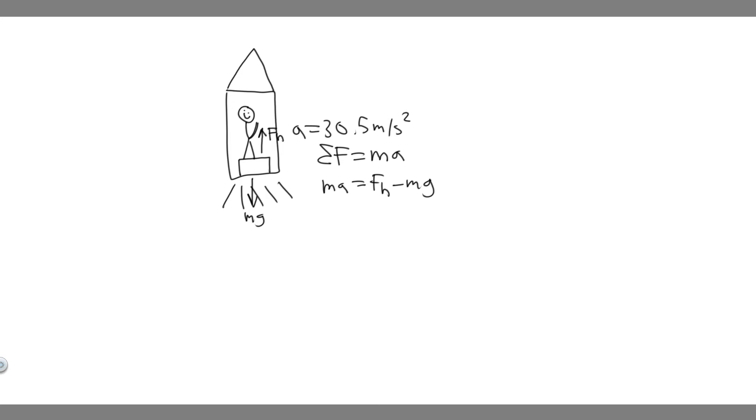And so they tell us the apparent weight. What that means, essentially, is they're talking about the normal force. So if they ever ask you for apparent weight, whether it's an elevator or a rocket like this, they're talking about the normal force. So what you want to do is solve for F sub n. And we know the mass of the astronaut is 92. We know they're going to be accelerating at 30.5, and then we know g. So all we got to do is use this formula and solve for F sub n.